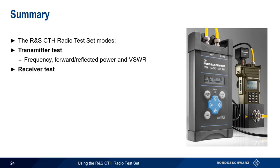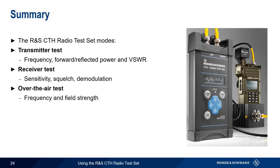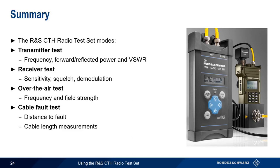In receiver test mode, the CTH transmits a signal into the radio under test for verifying things such as sensitivity, squelch, and demodulation. The CTH can also be used as an over-the-air tester for measuring both frequency and field strength by means of its built-in antenna. Finally, cable test mode can be used to determine distance to fault or cable length in feed lines and antenna systems.